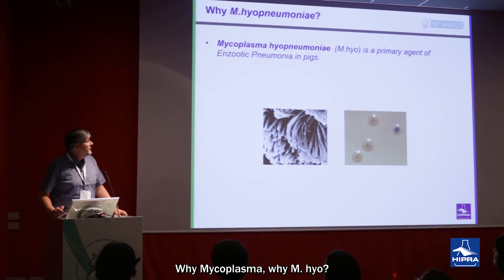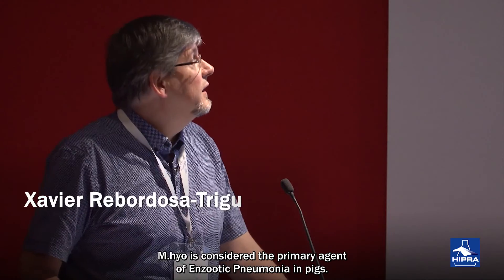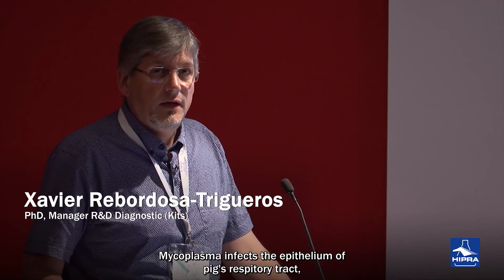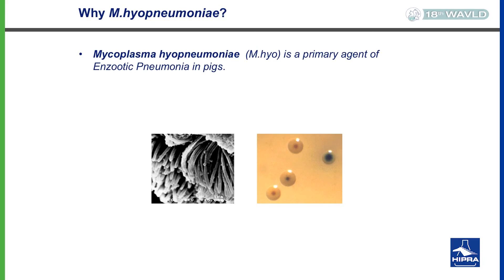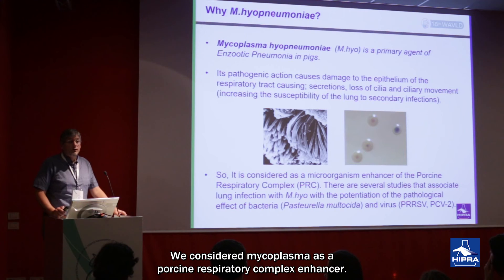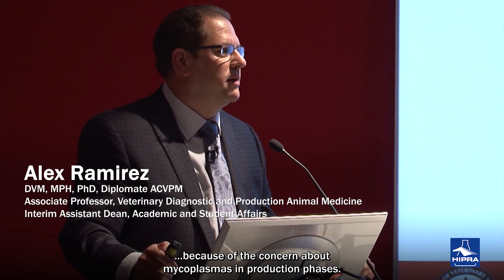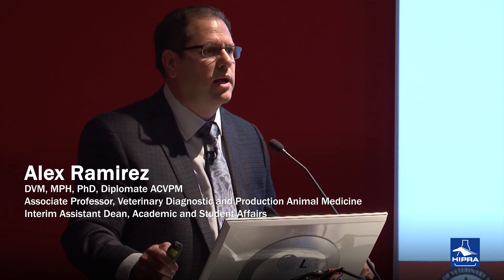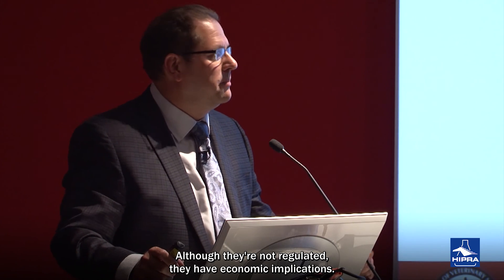Why mycoplasma, or why M'hyo? M'hyo is considered the primary agent of enzootic pneumonia in pigs. Mycoplasma infects the epithelium of the respiratory tract of the pig and causes damage to this epithelium. We consider that mycoplasma is an enhancer of the so-called porcine respiratory complex. Because of the concern that mycoplasmas have in the production phases, although they are not regulated, they cause significant economic implications.